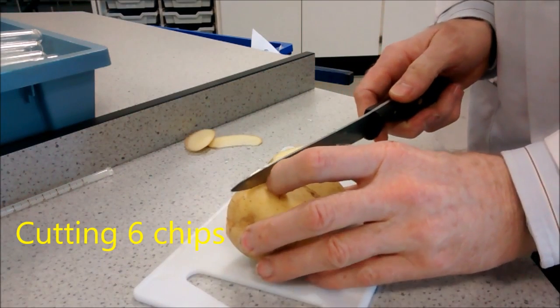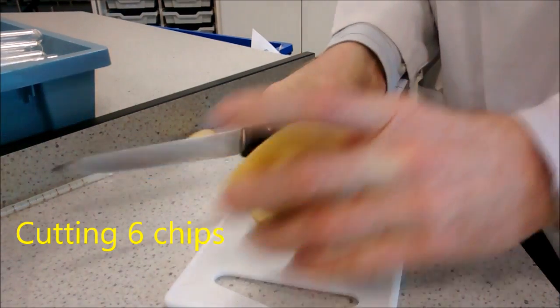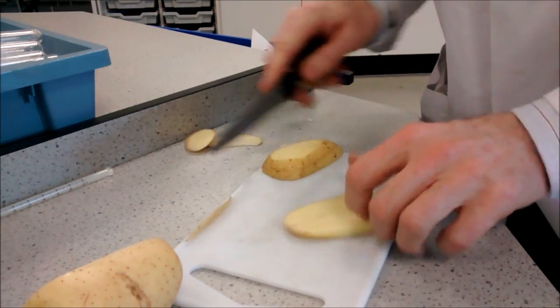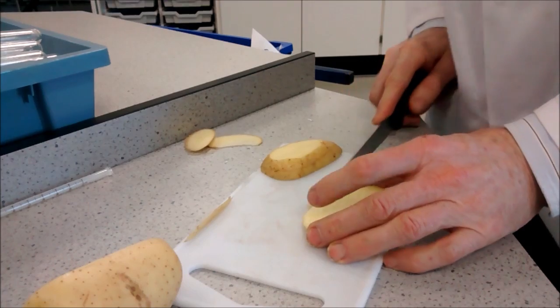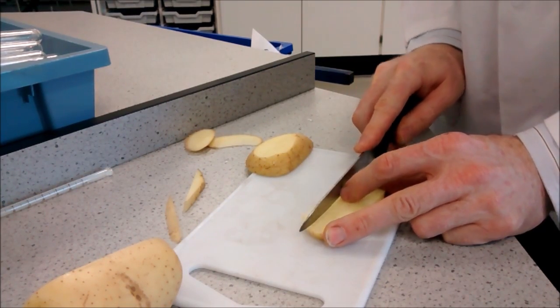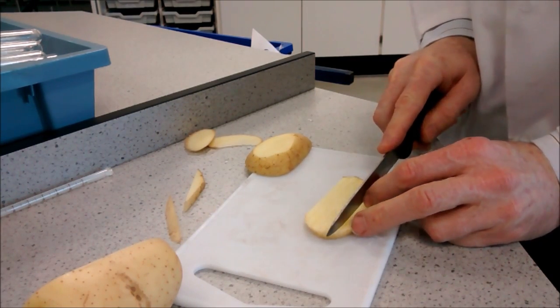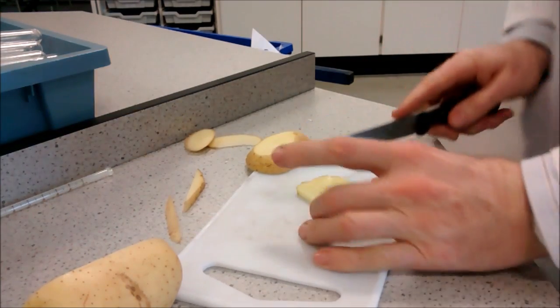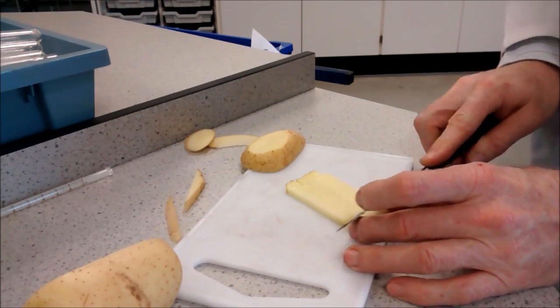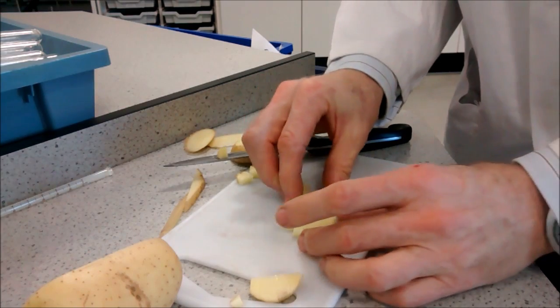Cut chips by first cutting a thin slice of potato, then slice off the skin and cut nice even chips. One, two, three, four, five, six. Get them all to the same length and there we've got six chips.